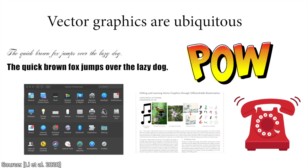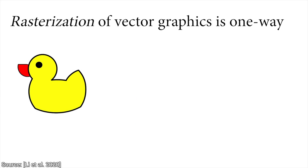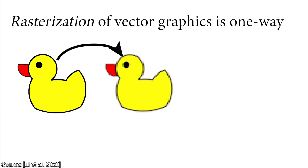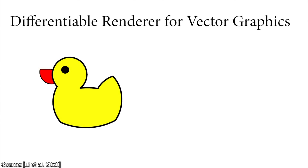Now, if we wish to, we can convert vector images into raster images, so the shapes will become pixels. This is easy. But here is the problem: if we do it once, there is no going back — or at least, not easily.